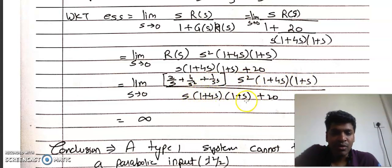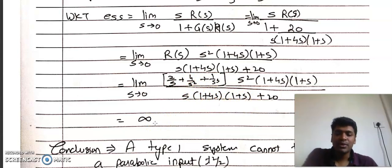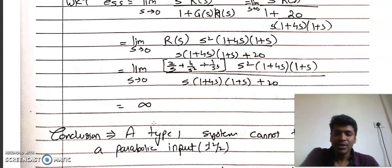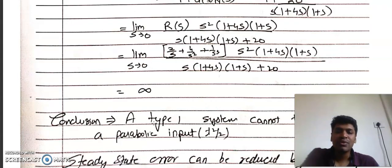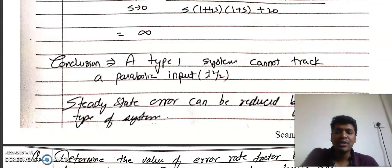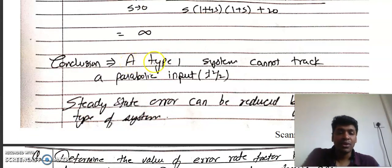After simplification, the value of ESS comes out to be infinity. So ESS for the given system when input is r(t) = 2 + 4t + t²/2 is infinite. Error is infinite means accuracy is zero — this is not an accurate system at all.